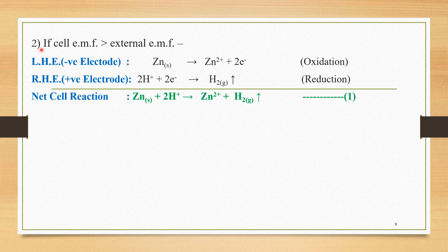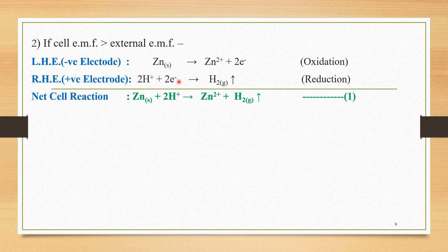The second case: if cell EMF is greater than the external EMF, current flows through the circuit and cell reactions take place. At the left-hand (negative) electrode, zinc undergoes oxidation giving Zn²⁺ plus two electrons. At the right-hand electrode, 2H⁺ from sulfuric acid accepts two electrons and is converted to hydrogen gas (H₂). Adding these half-cell reactions gives: Zn(s) + 2H⁺ → Zn²⁺ + H₂. This is cell reaction number 1.